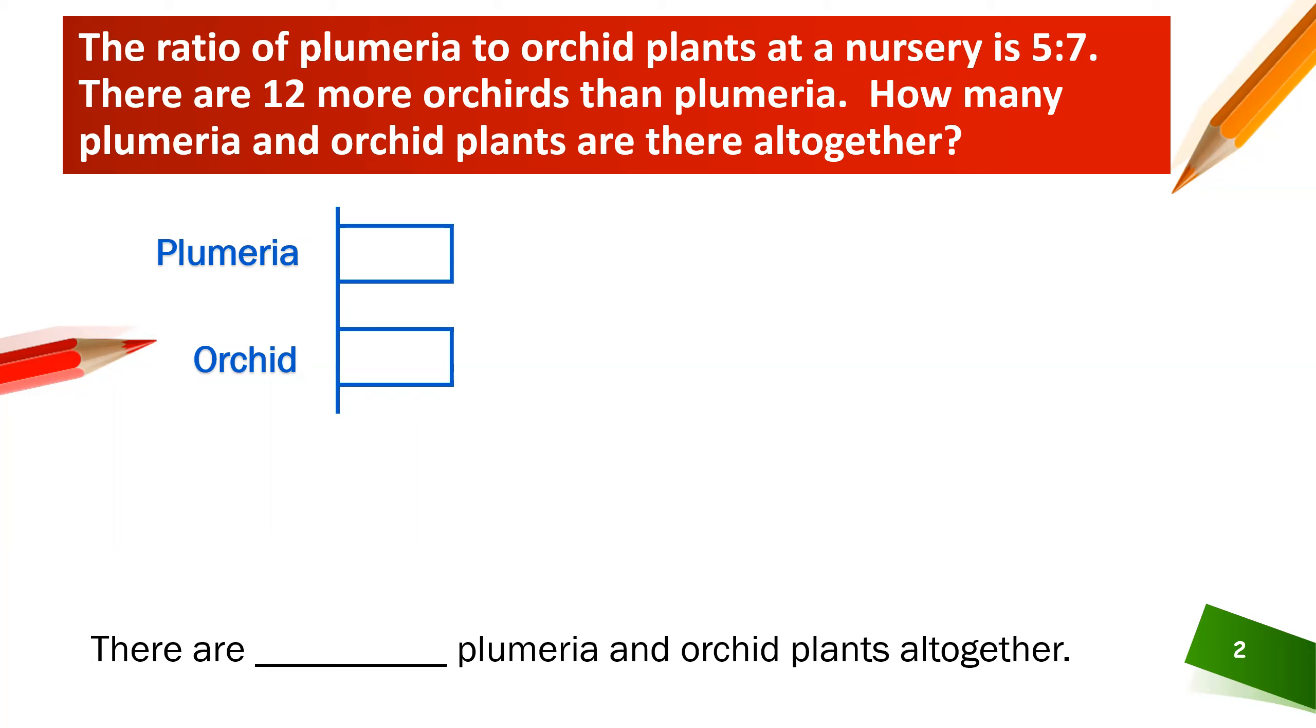The ratio is supposed to be 5 to 7. 5 plumeria is to 7 orchids. So let's put some bars up here. That means 5 parts plumeria is to 7 parts. 5, 6, 7 parts orchids. And it also says here in the problem that are 12 more orchids. So that part right there is 12.